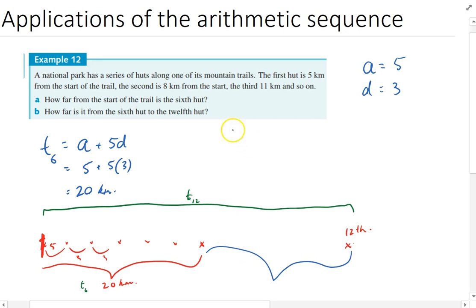Jumping straight into it, term 12 equals a + 11d, which is 5 + 11(3), which is 5 + 33, which is 38. So t_12 = 38.